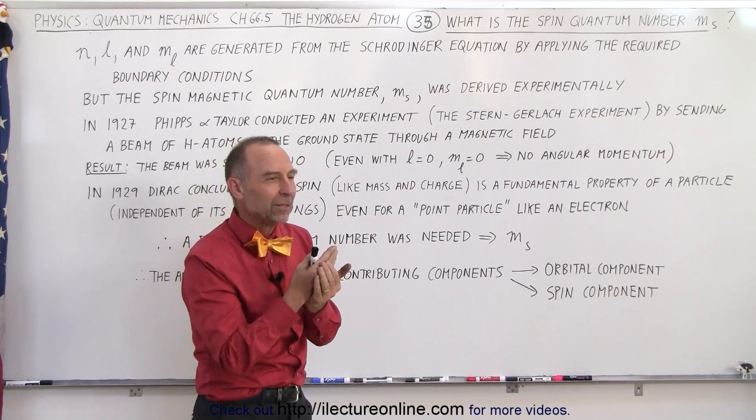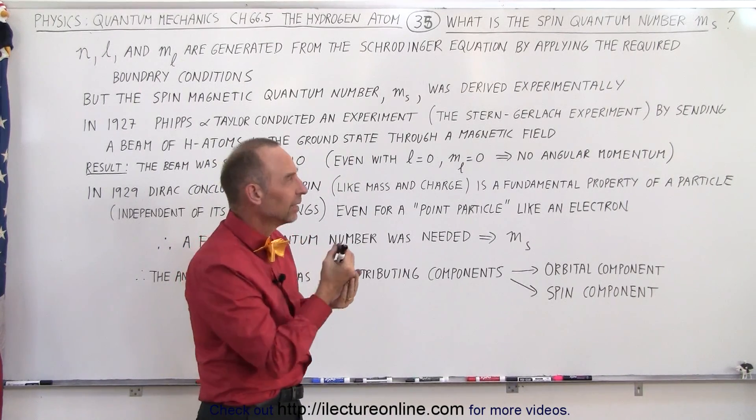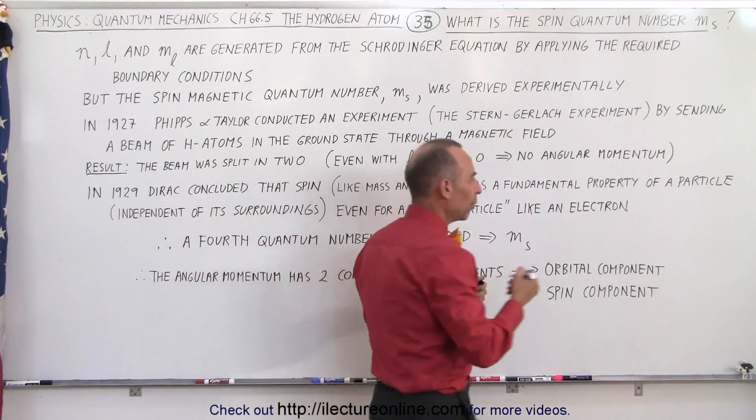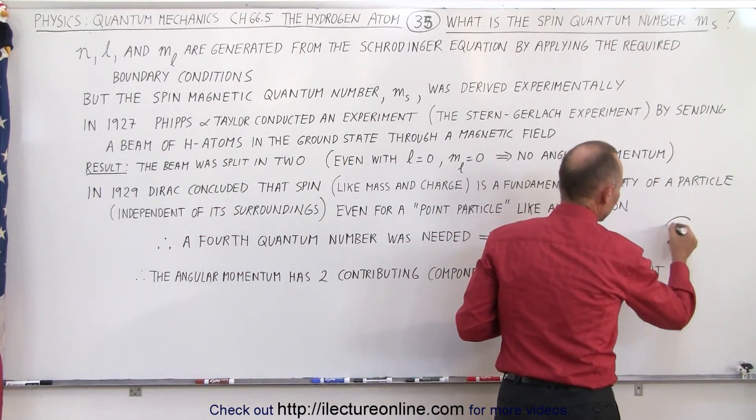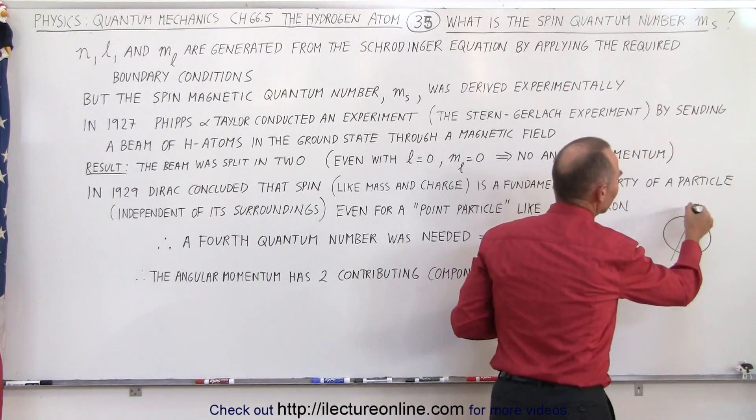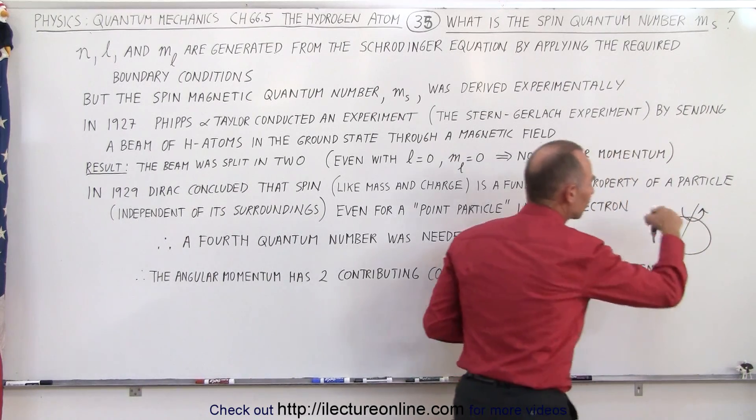Now, what does it exactly mean when an electron has a spin? Well, if we think of, for example, a baseball, and let's say the baseball is spinning on its axis,